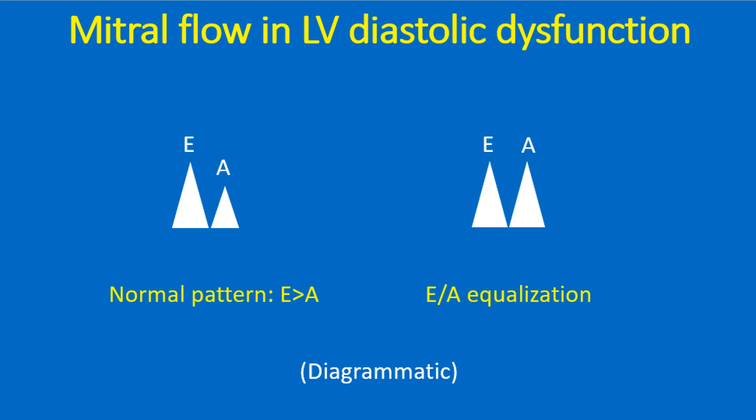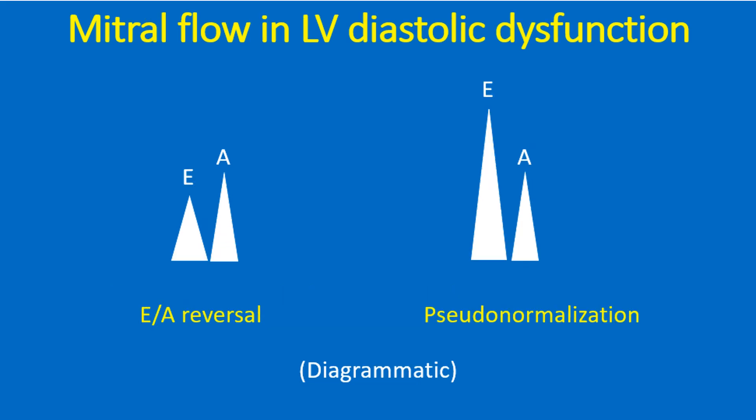Normally most of the left ventricular filling occurs during early diastole and the E wave is taller than the A wave. When ventricular relaxation is impaired in diastolic dysfunction, the atrial contribution to ventricular filling progressively increases and the A wave height increases, leading to equalization of E and A waves. As severity of diastolic dysfunction increases, the A wave becomes taller than the E wave — this phase is known as E by A reversal. Still further, the E wave becomes taller due to elevated left atrial pressure, mimicking a restrictive filling pattern — this is called pseudonormalization of the mitral flow pattern.